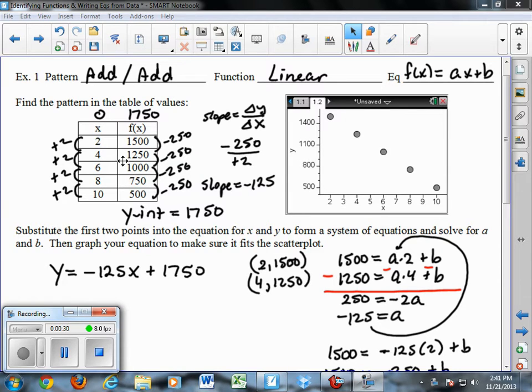In this case, you're going up by 2 and down by negative 250. So it's easy to find the slope from the table of values because the change in y is how much you're going down each time, negative 250. The change in x is how much you're going up each time, the positive 2. So slope is negative 250 over positive 2, which is negative 125.